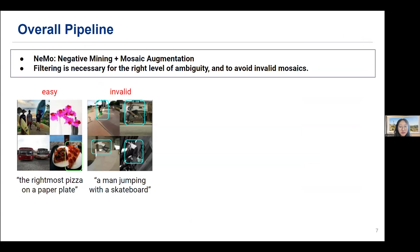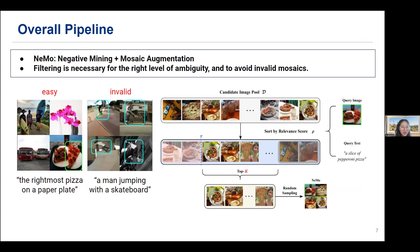In order to retrieve visually similar images, we use an image-text retrieval model like CLIP. What we need here is the right level of visual ambiguity, meaning the augmented image should be neither too easy nor too hard. However, if we take any retrieval results, the mosaic might end up being too easy or invalid with multiple answers. So the proposed method first sorts images in the pool based on similarity scores, then drops images by thresholding at tau, because we don't want multiple answers to exist at the same time. On top of this, we only use the top-k images to select three negative images.